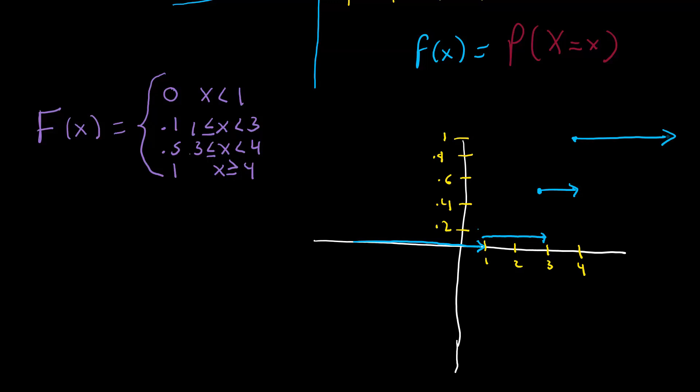So that's basically it. In this case, the cumulative distribution function is just going to equal the probability that the random variable X is less than or equal to x. This example covers the probability mass function and cumulative distribution function in the discrete case.